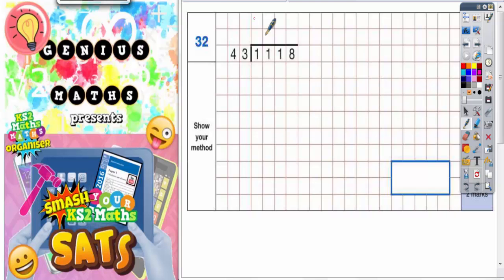Question 32. How many 43's will divide into 1118? So 1118 divided by 43.